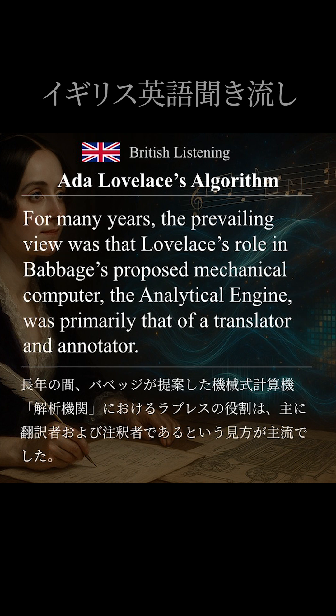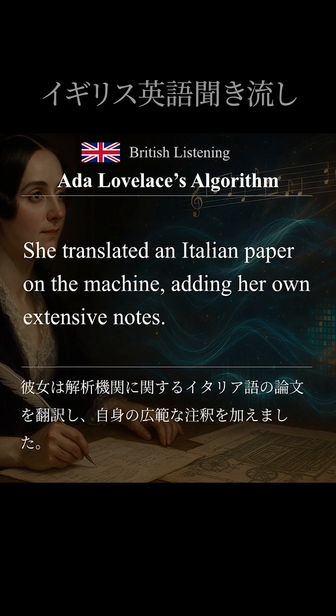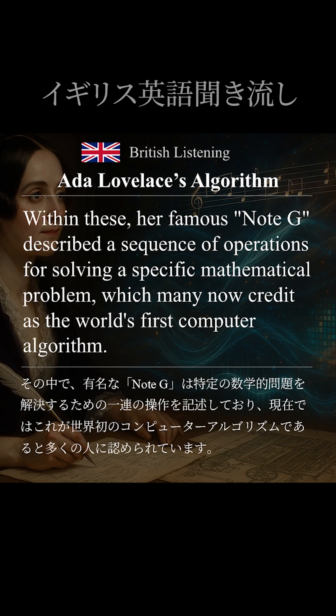For many years, the prevailing view was that Lovelace's role in Babbage's proposed mechanical computer, the Analytical Engine, was primarily that of a translator and annotator. She translated an Italian paper on the machine, adding her own extensive notes. Within these, her famous Note G described a sequence of operations for solving a specific mathematical problem, which many now credit as the world's first computer algorithm.